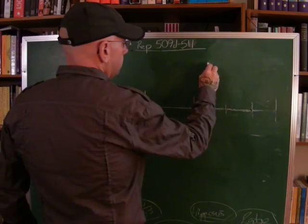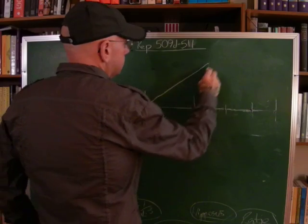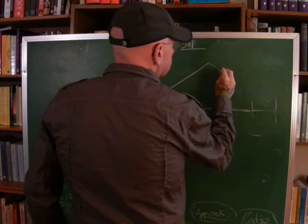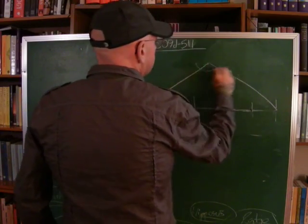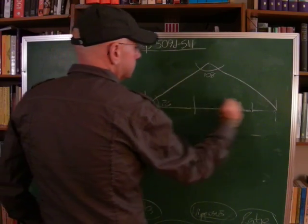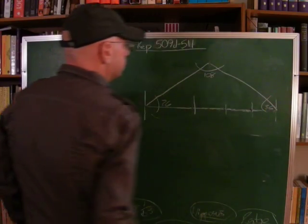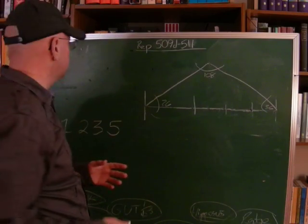It forms an isosceles triangle with degrees 108, 36, and 36. Well, why is this important? What does this have to do with anything?